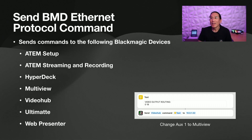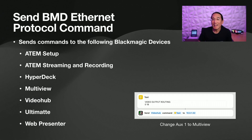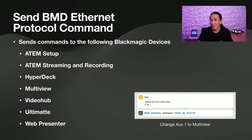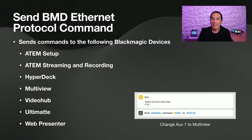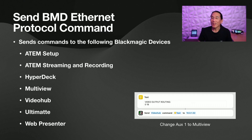In this example, we're sending to an ATEM switcher at IP address 10.0.1.52, a video output routing command 018. What that's actually doing is saying change auxiliary output 0 — which is auxiliary output 1 — to input 18, which happens to be the multi-view on the ATEM Mini Extreme ISO. So if I ran this shortcut, it will turn the aux 1 output into multi-view.